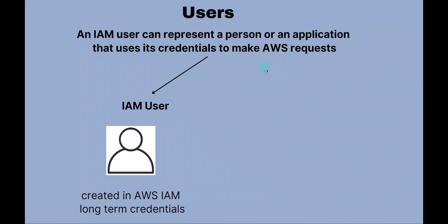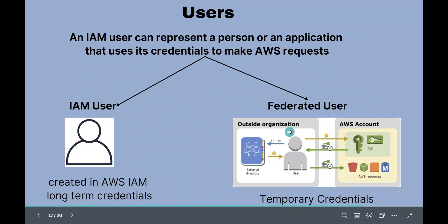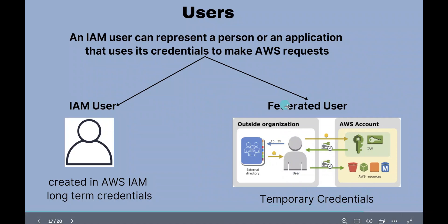There is another type of user called a federated user. A federated user is not created inside IAM. You can have an external directory, like Microsoft Active Directory, and link that with your AWS account so that people can log in using their existing credentials from that directory. This is called federated access, and these users will have only temporary credentials — that is the key difference between an IAM user and a federated user.